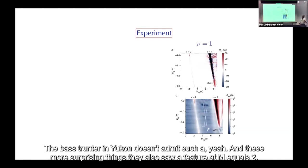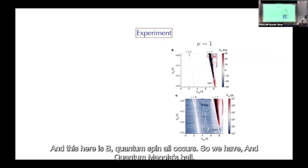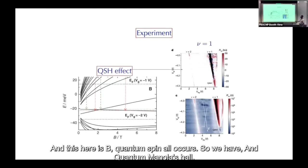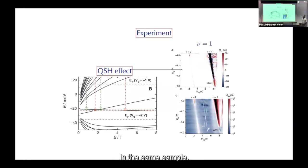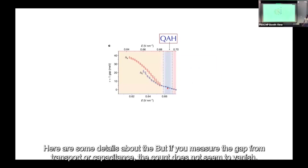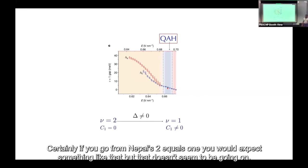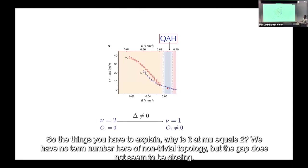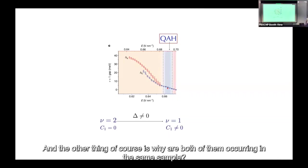More surprisingly, they also saw a feature at ν=2 — the quantum spin Hall effect. So we have quantum spin Hall and quantum anomalous Hall in the same sample. The gap measured from transport or capacitance does not seem to vanish when going from ν=2 to ν=1. You have to explain: why does ν=2 have no Chern number but the gap doesn't close, and why are both effects in the same sample?